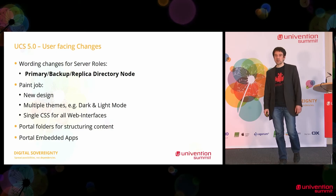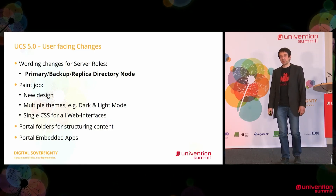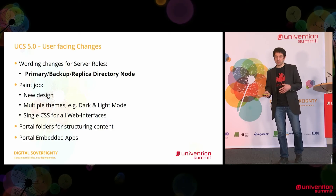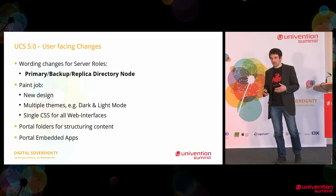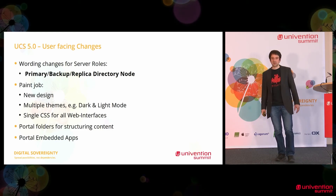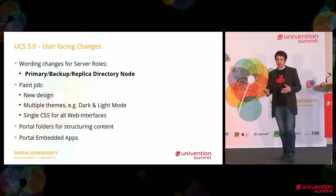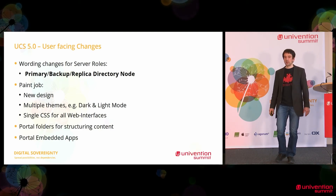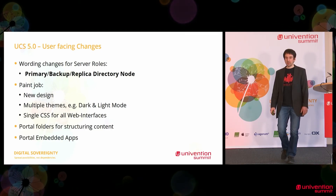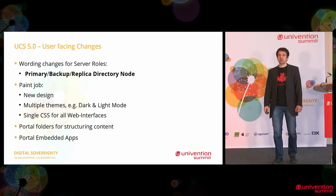This takes me to the changes that users can actually see. As already announced, we changed the wording from master-slave to primary, backup, and replica directory node. All these systems have their own directories. Primaries, backups, and replicas are the naming conventions indicating write capability — primaries can be written to, backups take over data from the primary, and replica takes over the name of the previous naming convention.